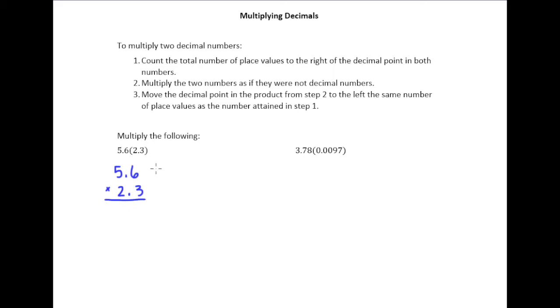So 5.6 has one place value to the right of the decimal point and so does 2.3. What I'm going to do is total them up - total means add them up - and put that number, one plus one is two, down here. We're going to come back to this number a little bit later.